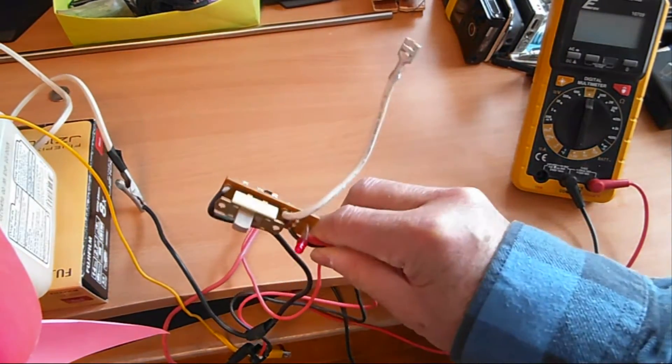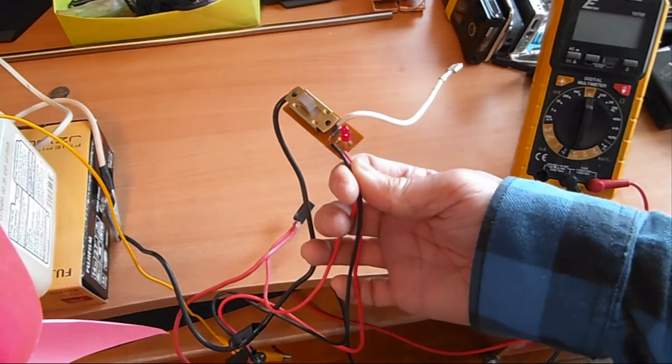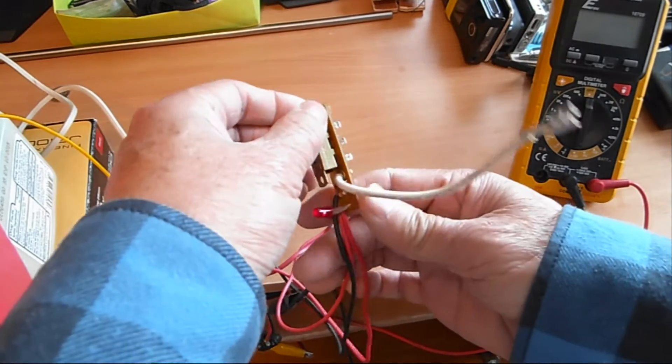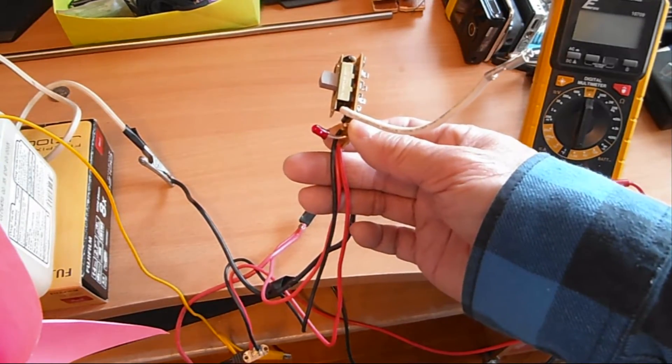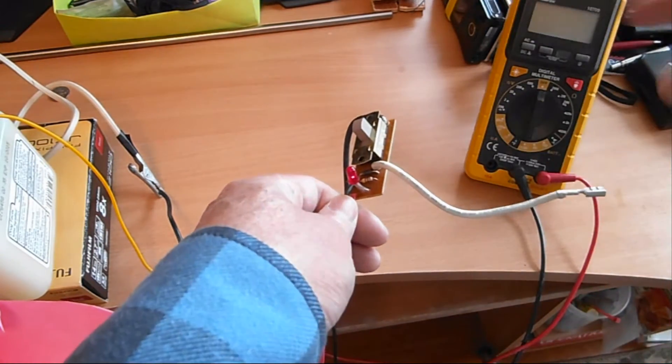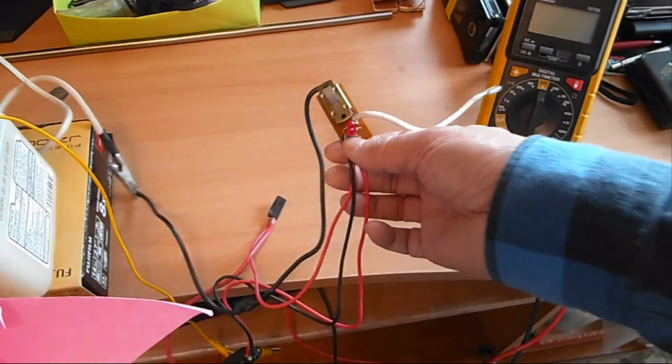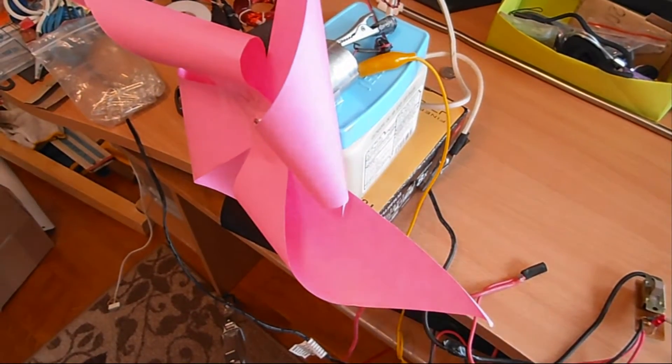Okay I plugged in that transformer. You can see the light comes on and that battery charger transformer outputs 300ma. Actually I measured it. It's about 14.6 volts and 300ma is not that much.